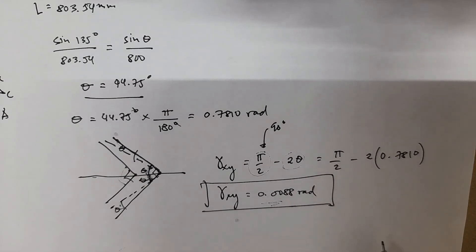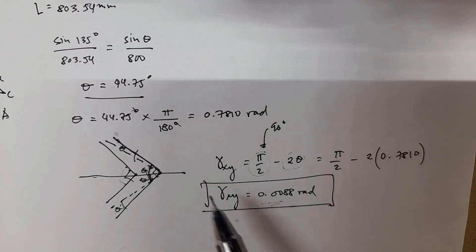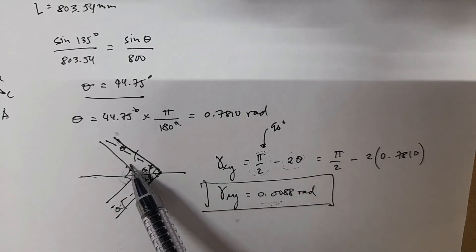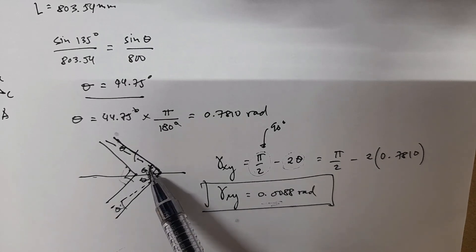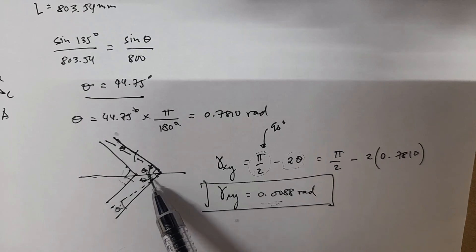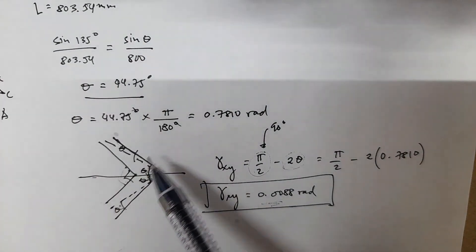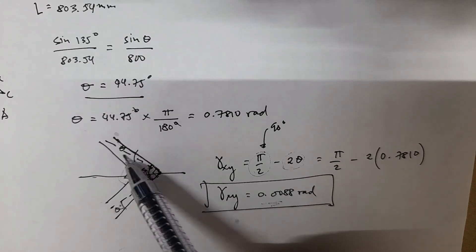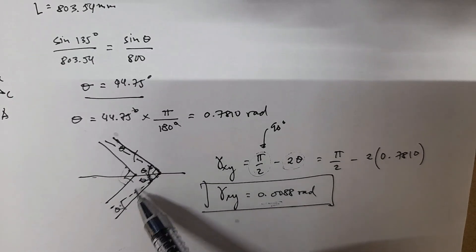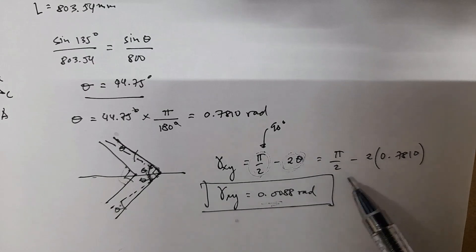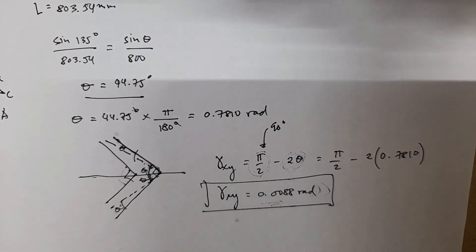To review why we subtract: we want to find the change from the original angle to the new angle. The original is 90 degrees; the new angle is 2 theta, because the 5mm movement narrowed the angle. We're after the change — both sides of the angle change added together. So 90 degrees minus the new angle equals the change in angle, which is the shear strain gamma_xy at point A.